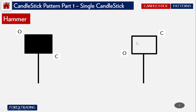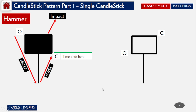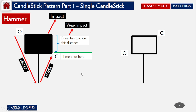Next, we have another form — the Hammer. There is a bearish black hammer and a white bullish hammer. In the hammer, the price opens and sellers take it down to the bottom of the lower wick, then buyers take the price up to where it closes. The impact will be in the opposite direction of the wick. We call it a weak impact because the buyer still has to cover the distance from the close back to the open.